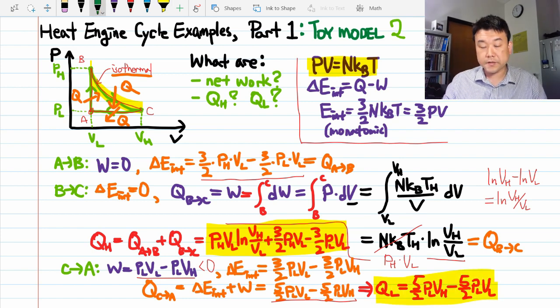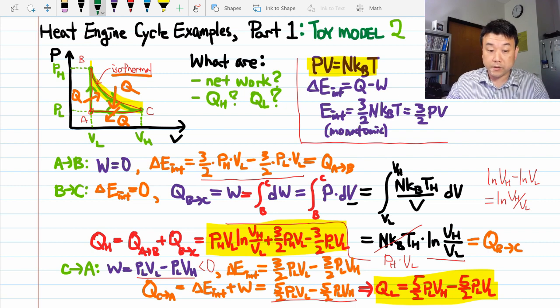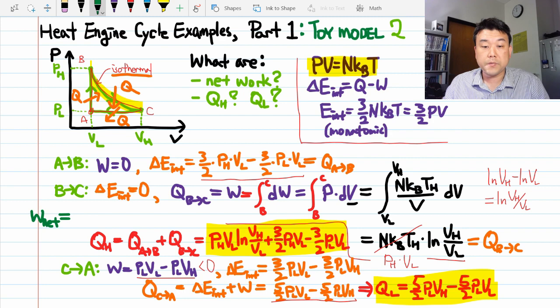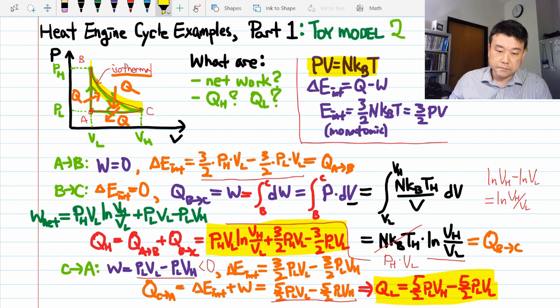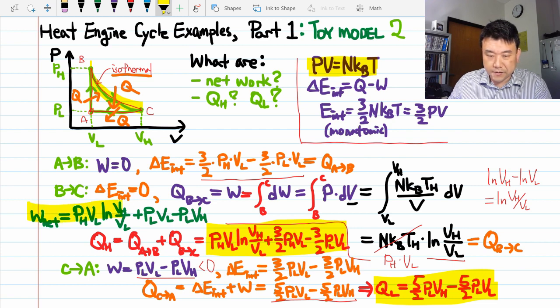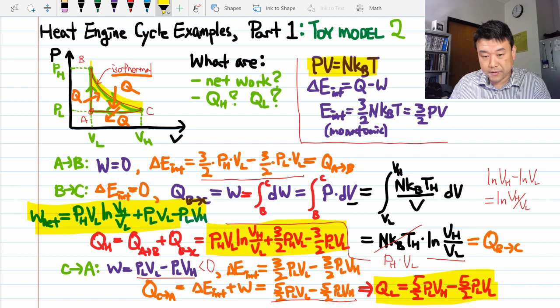So, those are the heat transfers. Let me write out the network done, which is the work done in the step B to C plus the work done in the step C to A. It's already negative. So, combining those two results, we get... It doesn't really simplify.